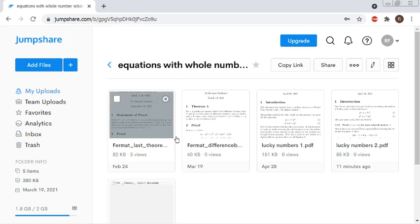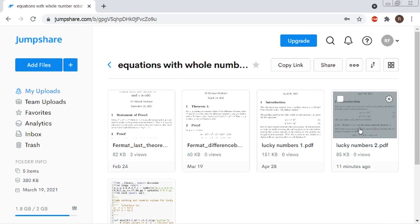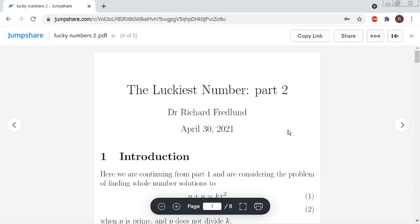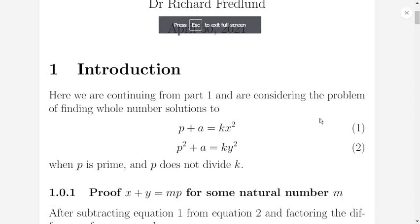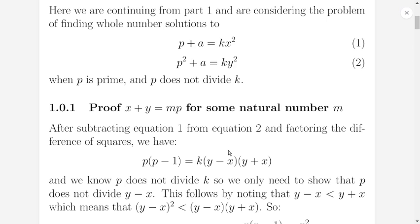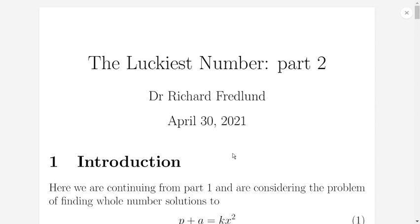And I'm just going to talk about equations with whole numbers, Lucky numbers 2. Look at the problem. It's a continuation. Lucky numbers 1 I did an exploration of this, but it went in all kinds of directions. But lucky number 2 is a little bit more concise and probably more readable.